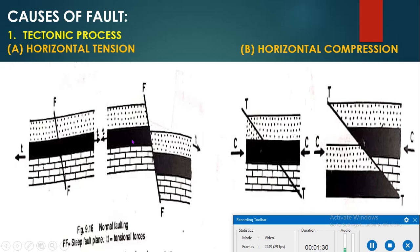In horizontal compression, rocks fail under compression along low-angle fractures. In this process, reverse fault or thrust fault may be produced. In horizontal compression the angle is very low, whereas in horizontal tension or normal faulting the angle is greater than 60 degrees.